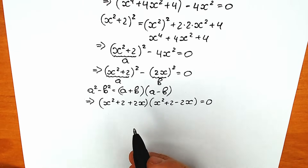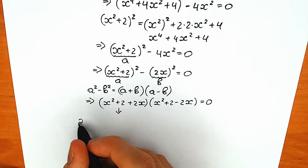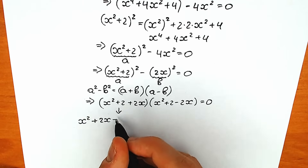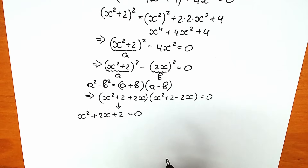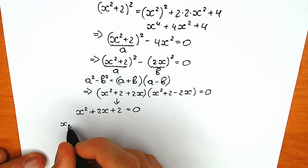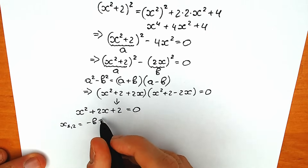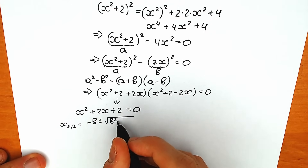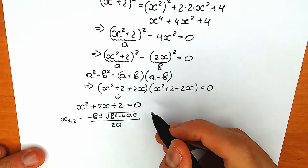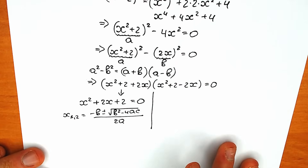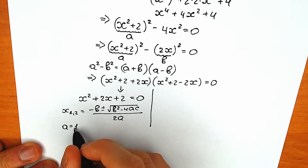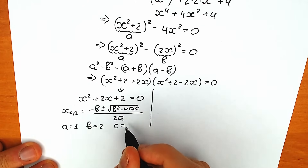Let's solve the left equation: x squared plus 2x plus 2 equals zero. We'll use the quadratic formula: x equals minus b plus or minus square root of b squared minus 4ac, all over 2a. The coefficients are a equals 1, b equals 2, and c equals 2.